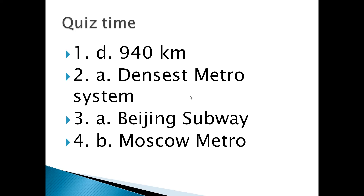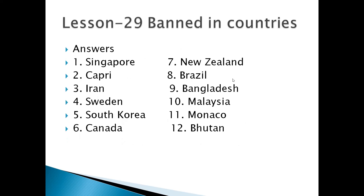Next we study lesson 29 — ban in countries. Some things which are banned in some countries. Number 1: this country has imposed a ban on the import and sale of chewing gum. There is a 500 dollar — about 3300 Indian rupees — fine for spitting out gum on the streets. The name of the country is Singapore. Number 2: this island located in Italy has imposed a ban on wearing slippers and sandals that make loud noise. Answer is Capri.